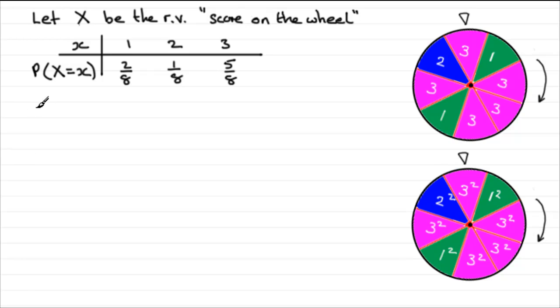We can now draw up a table for the square of the scores. If we define a new random variable, let's say let X² be the random variable (RV for short), and we'll have it as the square of the scores.